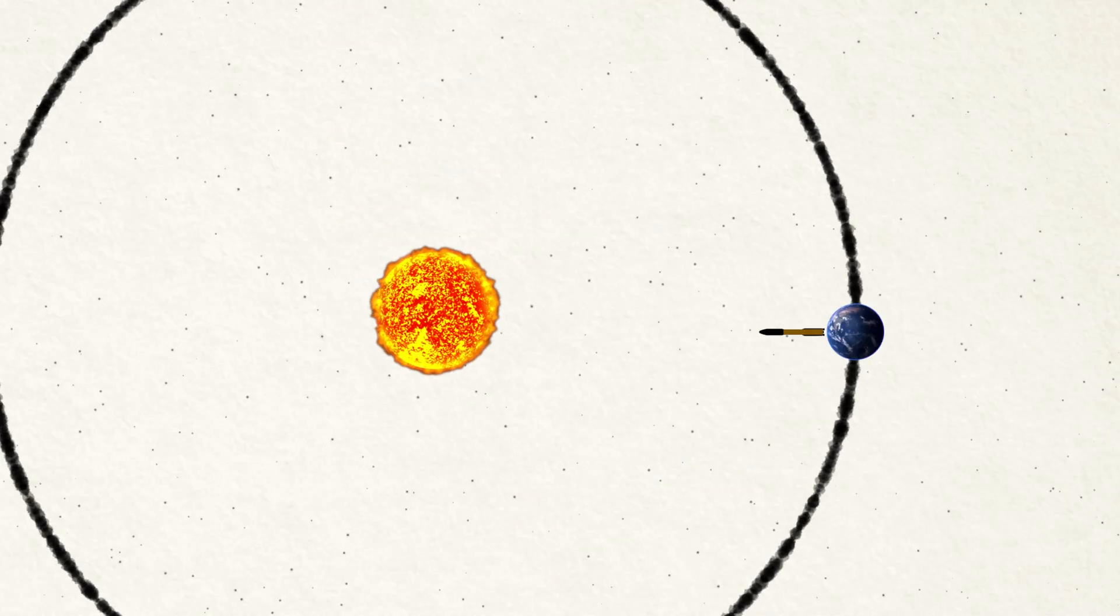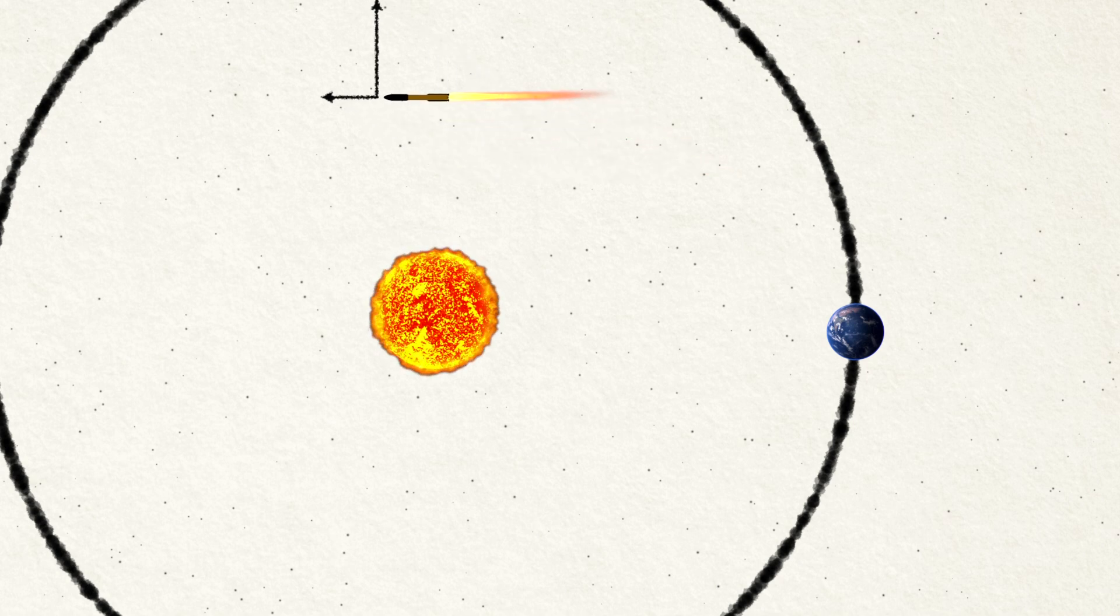If you launch a rocket from Earth straight toward the Sun, it won't lose that sideways speed, and so it will miss the Sun.